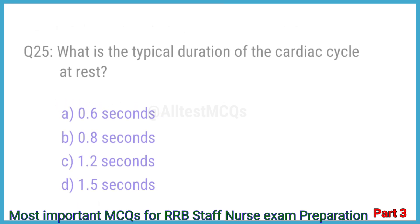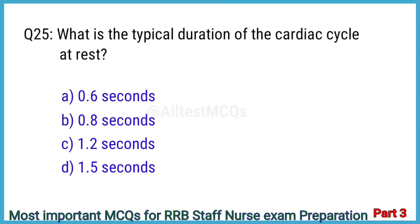Question No. 25. What is the typical duration of the cardiac cycle at rest? The right answer is Option B: 0.8 seconds.